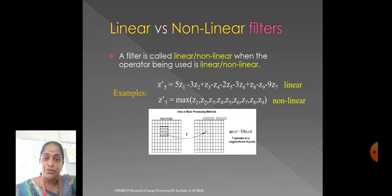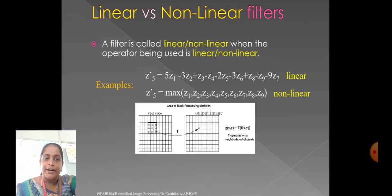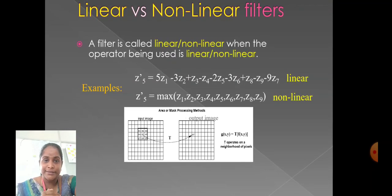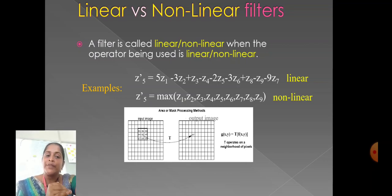While coming into linear versus non-linear filters, a filter is called linear or non-linear when the operator being used is linear or non-linear. For example, Z5' equals 5Z1 minus 3Z2 plus Z3 minus Z4 minus Z5 minus Z6 plus Z8 minus Z9 minus Z7. It is a linear process.